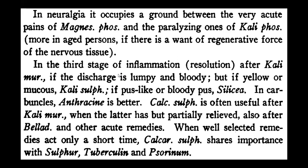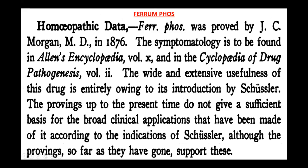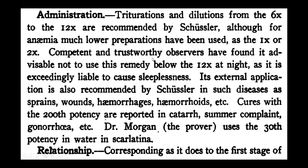So this is all about Calcarea sulph. We have now finished Calcarea fluor, Calcarea phos, and Calcarea sulph. Moving ahead to Ferrum phosphoricum: it was proved by Jesse Morgan, MD, in 1876. The symptomatology is found in Allen's Encyclopedia. The wide and extensive usefulness of this drug is entirely owing to its introduction by Schüssler; the provings do not give sufficient basis for the broad clinical applications made of it, though they do support Schüssler's indications.